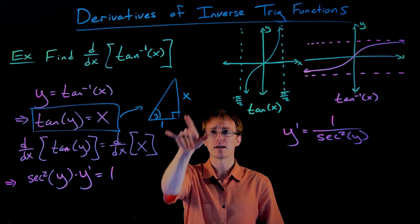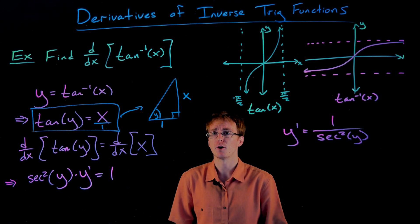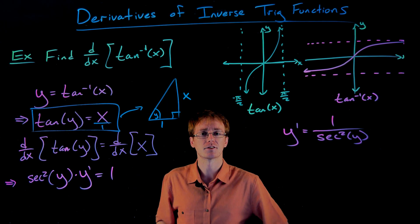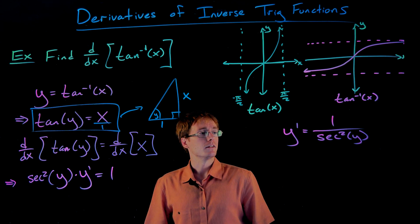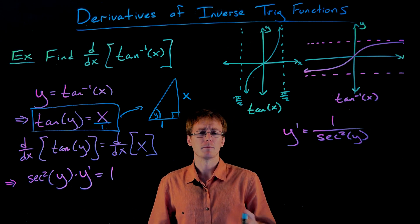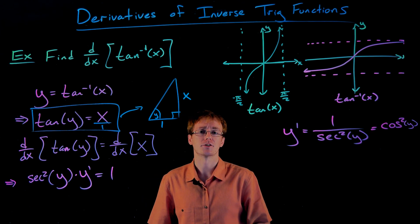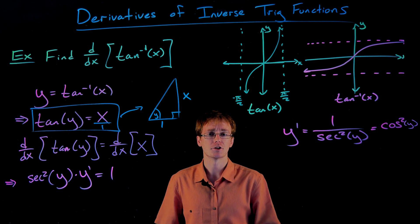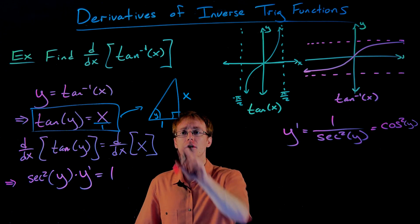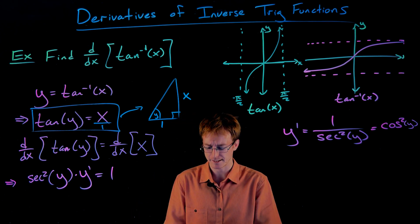So if we make our opposite side length x and our adjacent side length 1, then this right triangle will be set up such that tangent of y equals x. Quick side note: you don't actually have to choose x and 1 — we could have made it 2x and 2, as long as the ratio simplifies to x, you've set up the triangle correctly. Now we want to find secant of angle y. Remember secant is the reciprocal of cosine, and cosine might be a little easier to find. Going back to SOHCAHTOA, cosine is adjacent over hypotenuse. We have our adjacent side length, but we haven't found the hypotenuse yet.